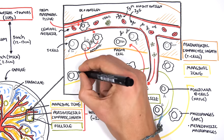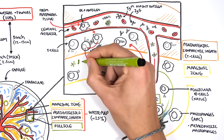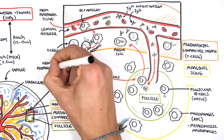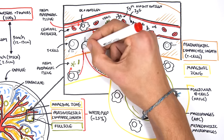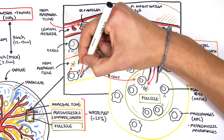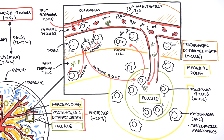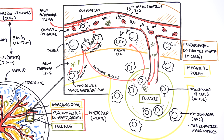Another way of mounting an immune response is where the macrophages within the spleen pick up pathogens such as viral antigens, present the antigen to the T cells, and the T cells activate the B cells in the follicles. The activated B cells become plasma cells, which produce antibodies against that antigen. As you can see, the white pulp is very important in mounting an immune response and producing antibodies against infections.